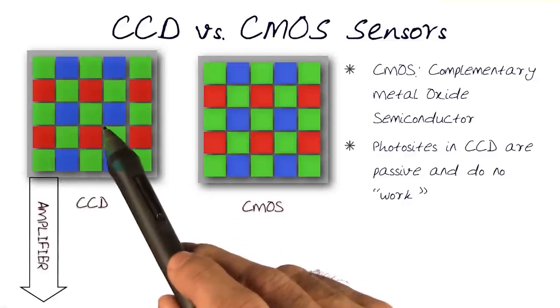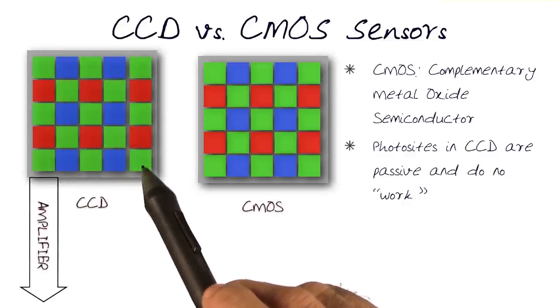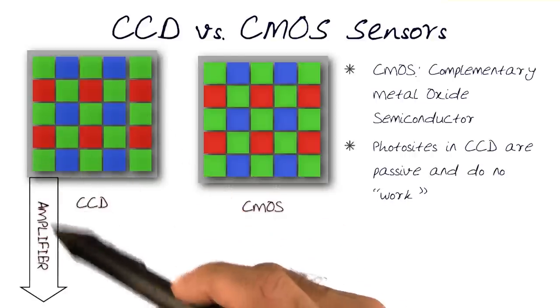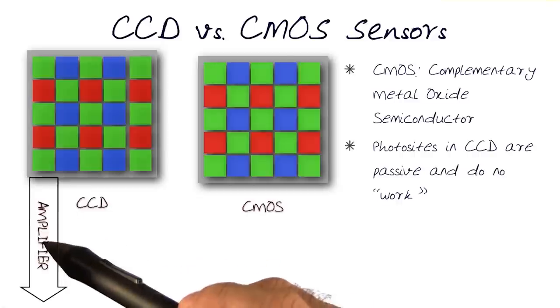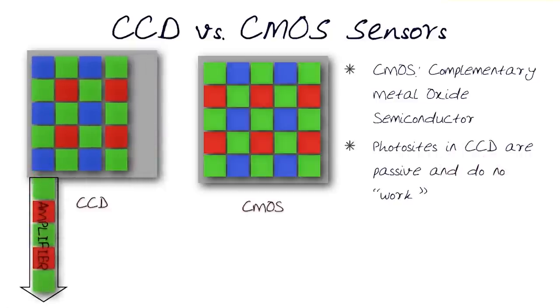So the big difference is, the photosites in a CCD are passive and do no work whatsoever. As soon as something is captured, information is then moved over, and there is an amplifier that's used to take the exact values and amplify it to a scale that can be measured by the storage device. I'm showing an example of how things are copied over, one row at a time, and then saved.